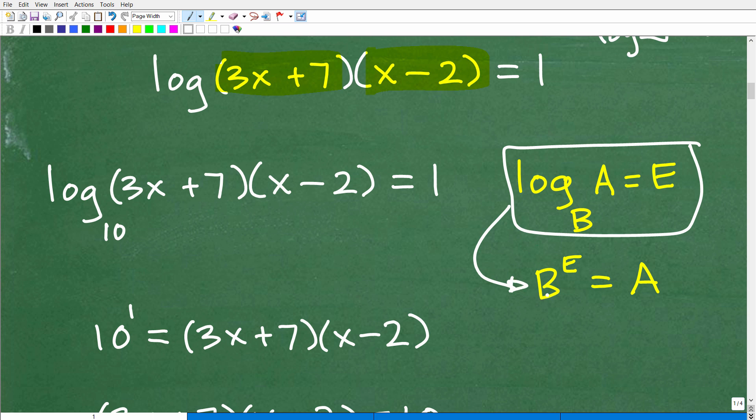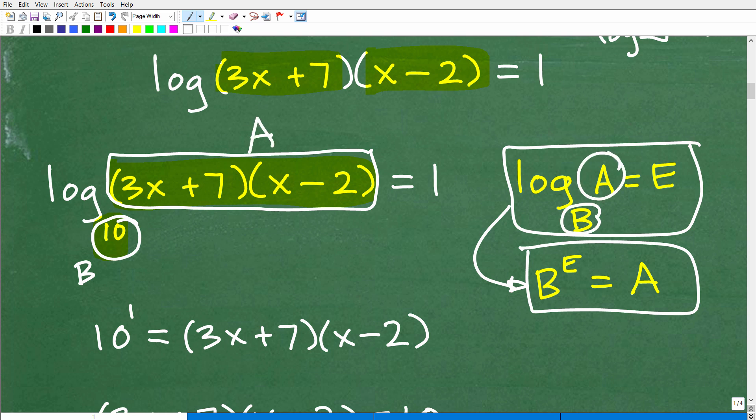Now this is log base 10. In the common logarithm, we don't typically write that base 10, it's just implied. When you're dealing with a logarithmic equation, once you have your log part all by itself equaling a number, now you're at the stage where you can rewrite this logarithmic expression or equation as a power. This is your bacon and eggs. Your base to the exponent is going to be equal to your answer. The base is base 10. This is the B, this part is the A, and that's the exponent (E). So the base is 10, exponent is 1. 10^1 is equal to (3x + 7)(x - 2).